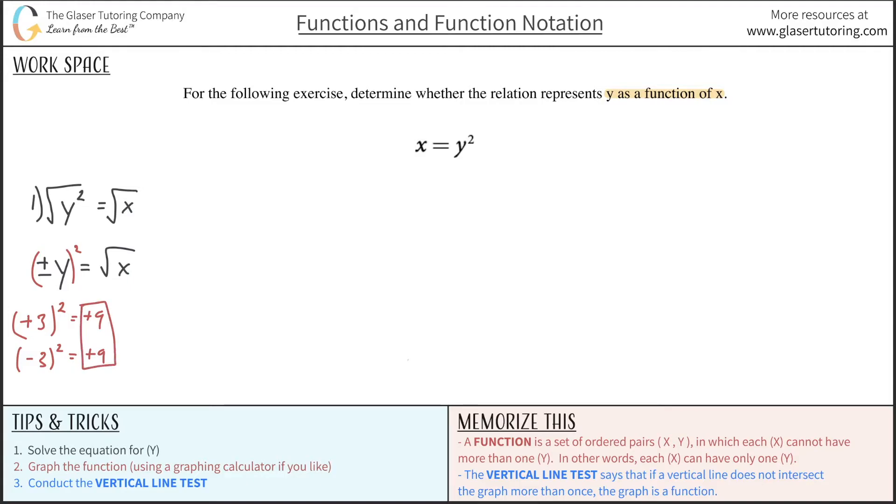That's the point. Okay, the point is that whenever you square root a square value, the result, the y value, could have been either positive 3 or negative 3. Both of them would have given you the same result. And therefore, we can never forget the fact...